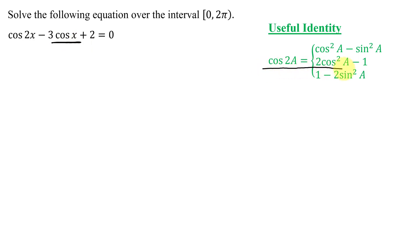So we need to pick the identity that just has the cosine function in it. I'm going to use this version of the identity, because the first one has the sine function in it, as does the third version. So I'm going to replace the cosine of 2x with this expression. So I'm going to have 2 cosine squared x minus 1. That is just what the cosine of 2x is. And then we just write the rest of the equation, which is minus 3 cosine x plus 2 equals 0.